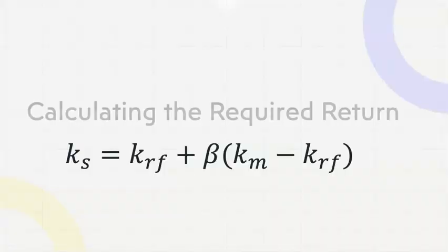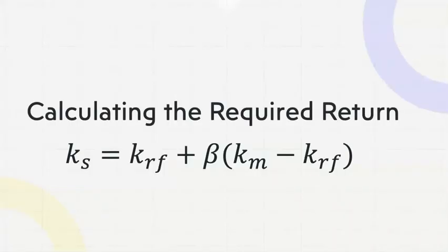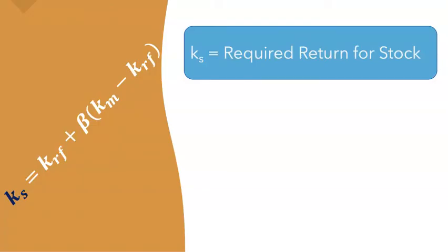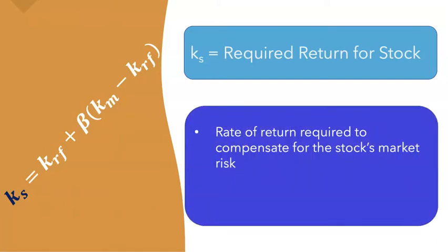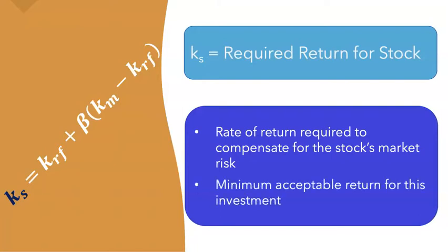Now that we have this, let's jump into CAPM. Our CAPM formula is: KS equals KRF plus beta times (KM minus KRF). KS stands for the required return of the stock — the rate of return that we require to compensate for the stock's market risk. It's a minimum return that we will accept for this investment; we would happily accept more, but we will not accept less.